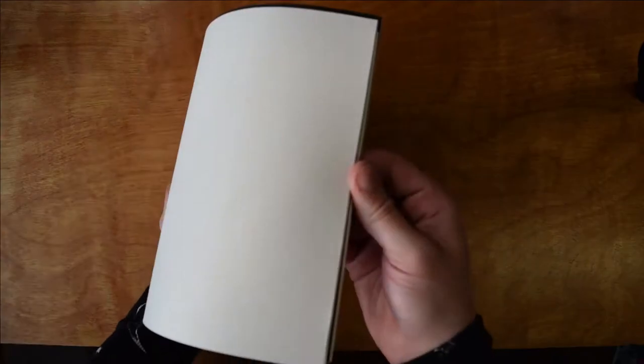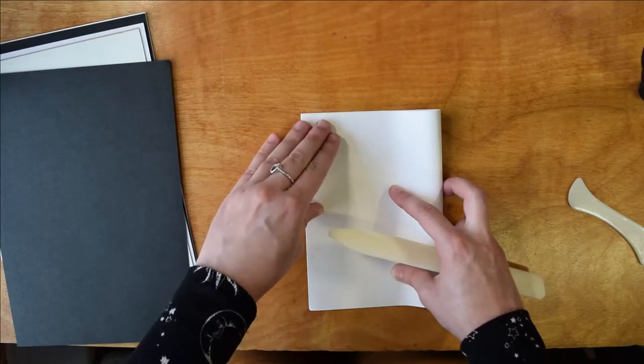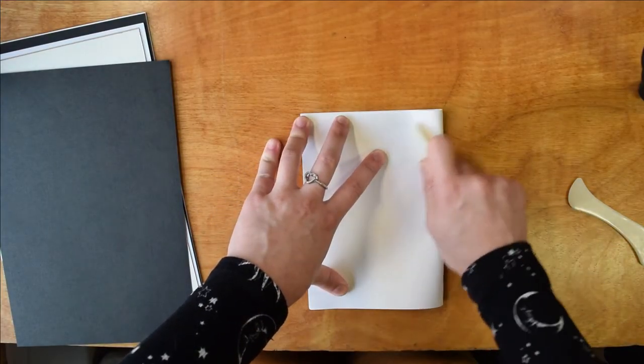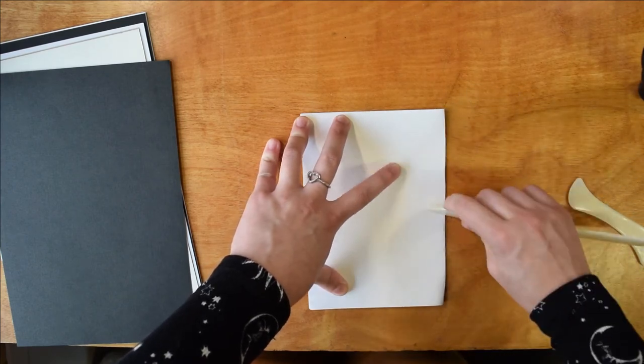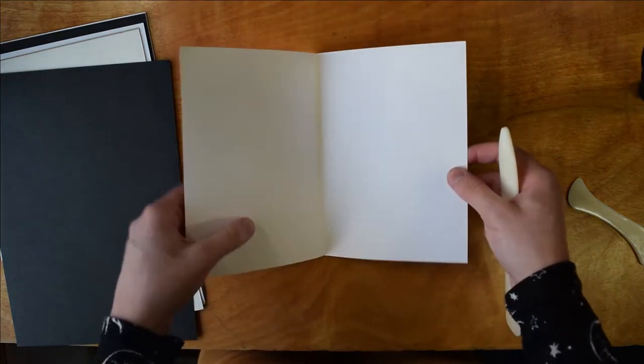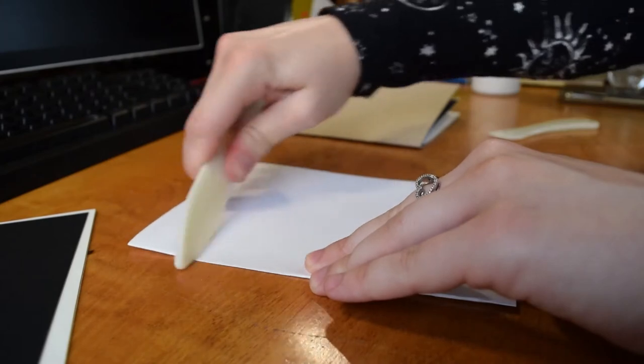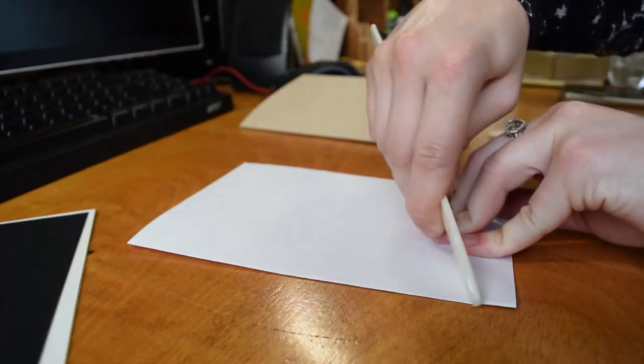Once I had all my paper relatively sized, I then pulled out this cute little book binding set that I ordered just for this and a little plastic bone folder so that I could get my edges nice and crisp, clean and flat. So satisfying.